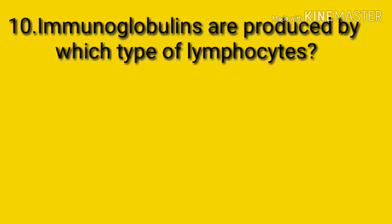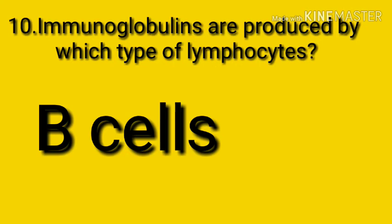Question number ten: immunoglobulins are produced by which type of lymphocytes? The answer is B cells. Immunoglobulins are produced by specialized white blood cells called B lymphocytes or B cells. When an antigen binds to the B cell surface, it stimulates the B cell to divide and mature into groups of identical cells called a clone.